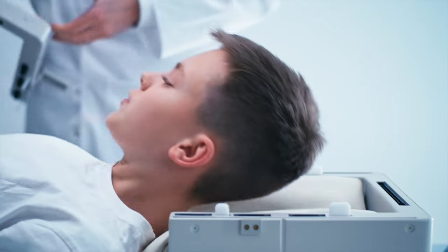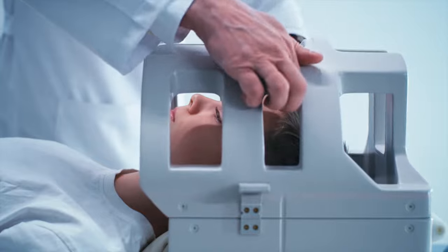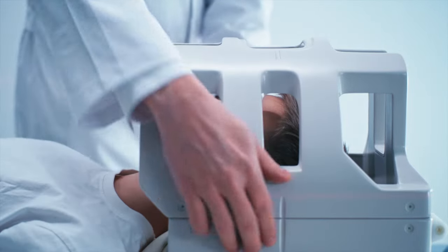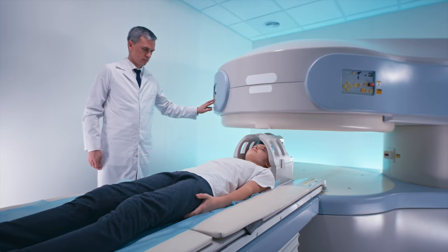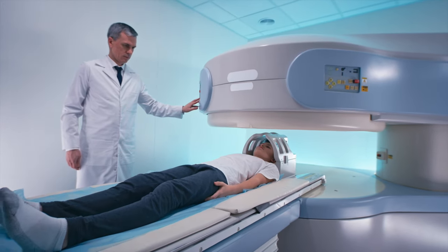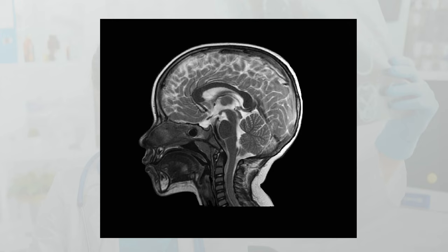To measure this emitted energy, we require some special equipment called a coil that is placed around the body part we are imaging. Protons in the different kinds of tissues all give off different amounts of energy. This is why computers are able to tell the difference between various types of tissues.